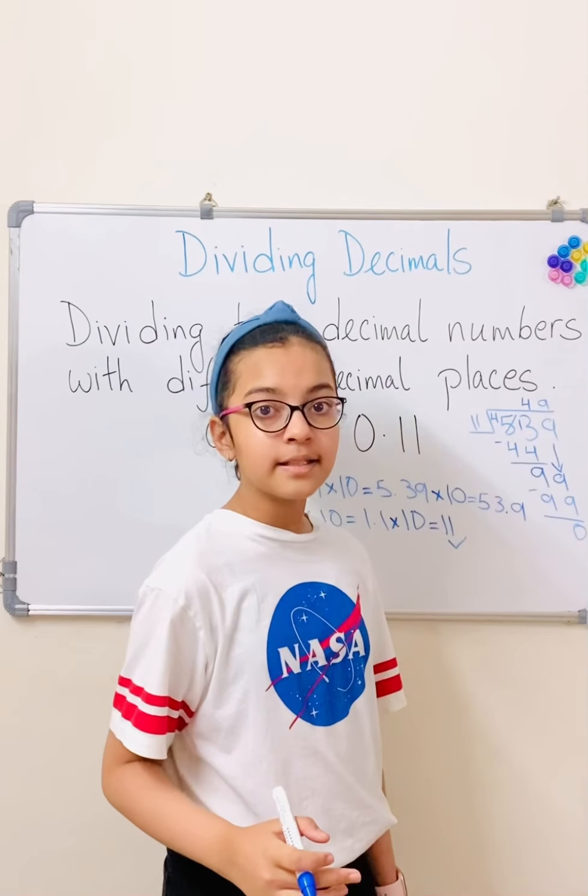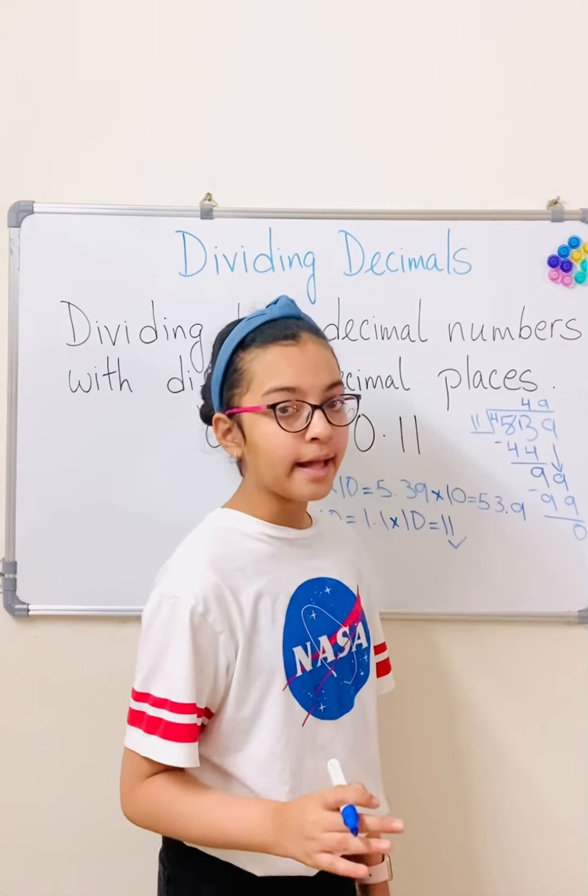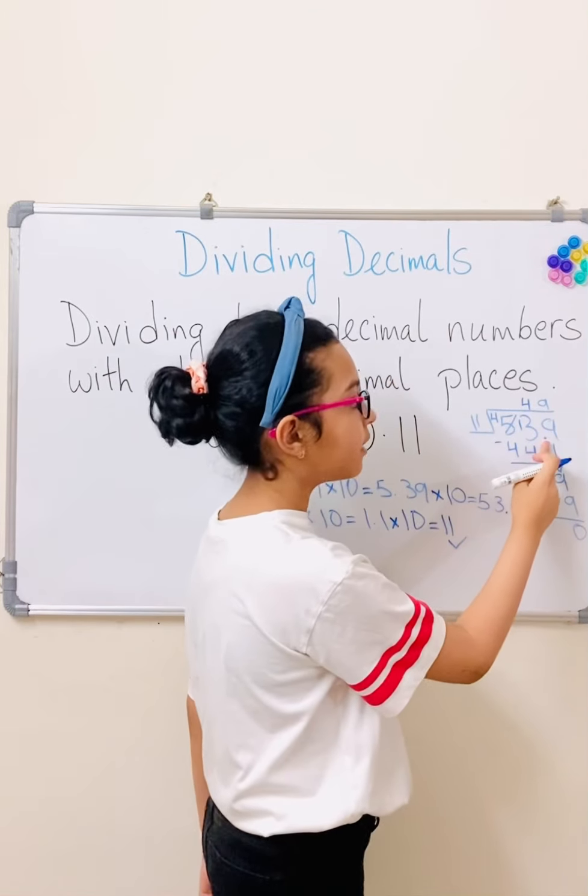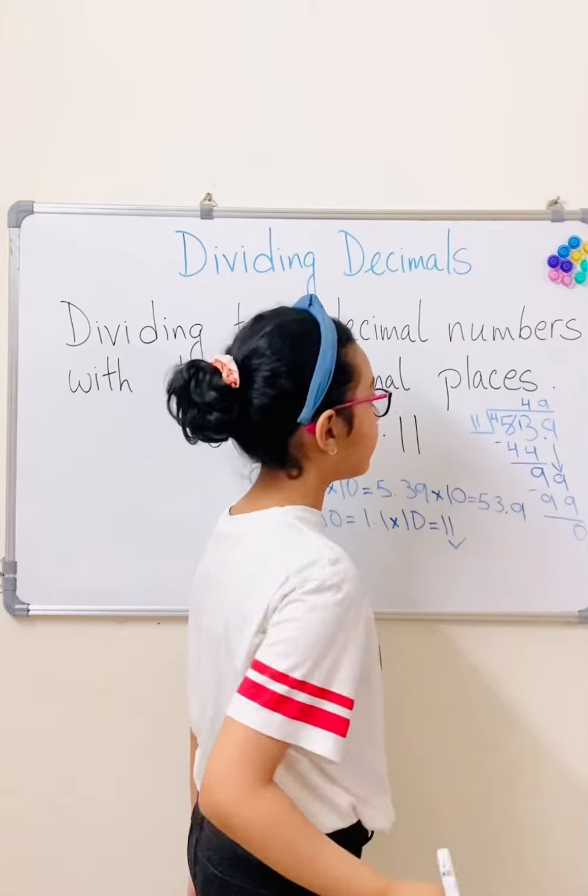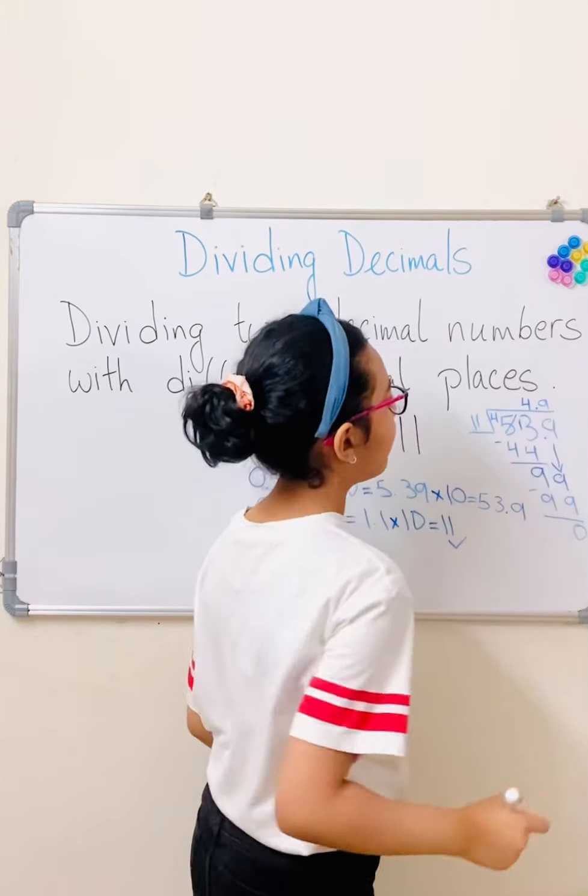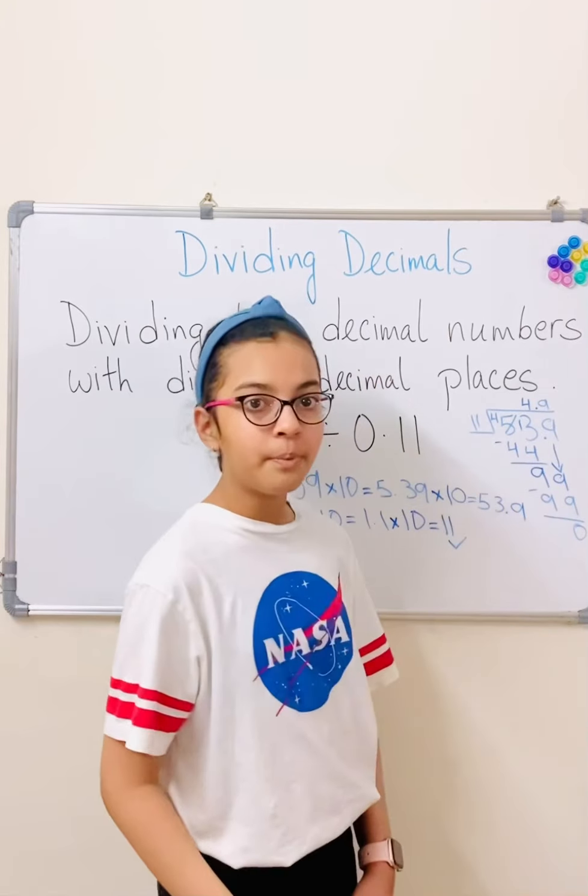But we can't stop here. We need to add a decimal in the answer. So here, the decimal point was here in our dividend. So the decimal in our answer needs to be right above it. So it's not 49, but it's going to be 4.9.